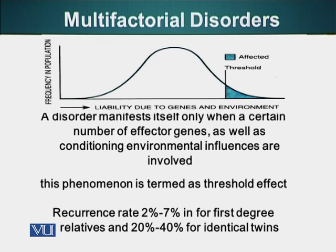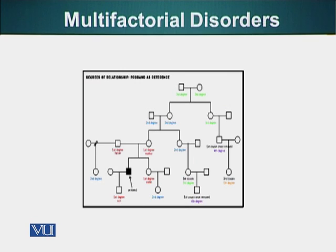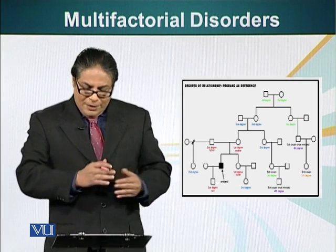The recurrence rate for identical twins is 20% to 40%. Identical twins have exactly the same genes, yet even in them the recurrence rate is not 100% or even 50% — it is only 20% to 40%. This figure shows how important environmental factors are compared to genetic factors.